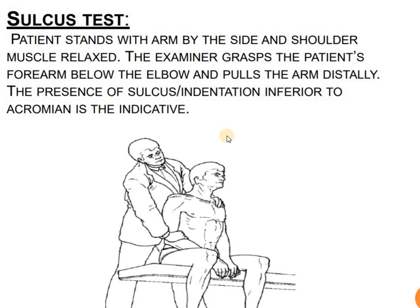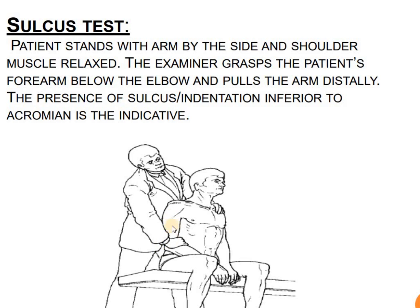The sulcus test: the patient stands with the arm by the side and the shoulder muscles relaxed. The examiner grasps the patient's forearm below the elbow and pulls the arm distally. The presence of a sulcus inferior to the acromion is indicative of inferior instability. This is also known as the sulcus sign of the shoulder joint. The examiner rests the opposite hand on the patient's opposite shoulder and pulls downward toward the ground.